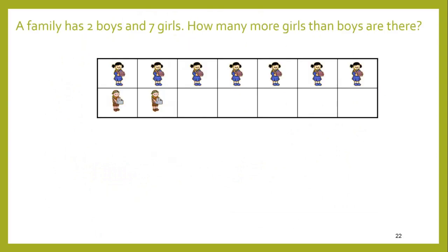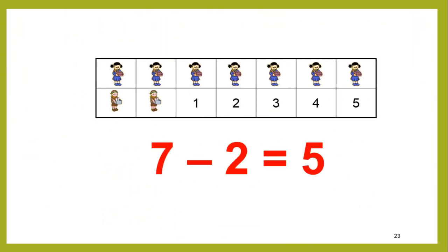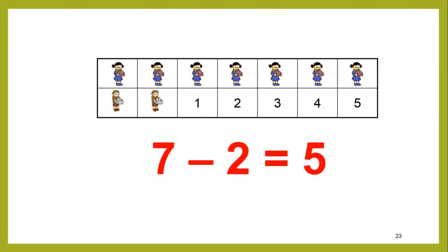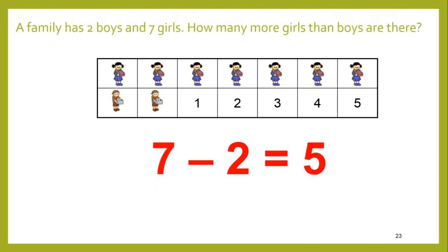A family has 2 boys and 7 girls — how many more girls than boys are there? We can just count up the extra ones: 1, 2, 3, 4, 5. And we can see that 7 take away 2 is 5, or there are 5 more girls than boys in this family.